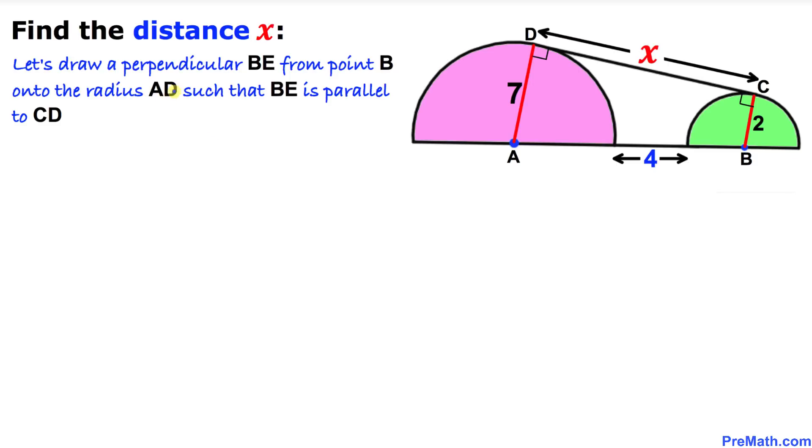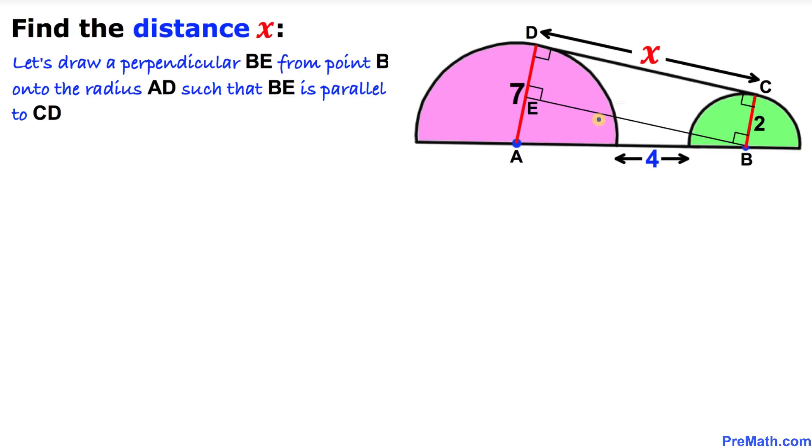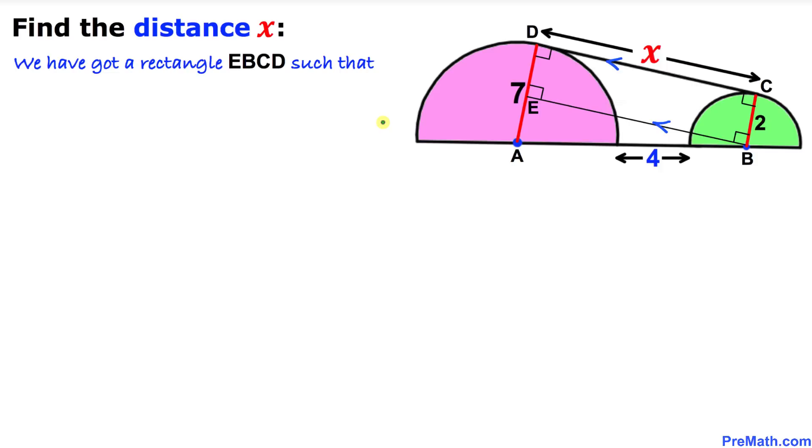And here's our next step. Let's draw a perpendicular BE from this point B onto some point E on this radius AD such that BE and CD are parallel. And here we have got this rectangle EBCD as you can see over here.